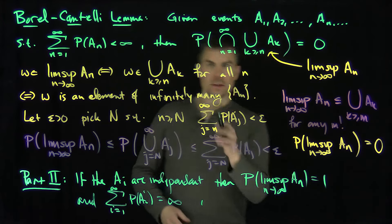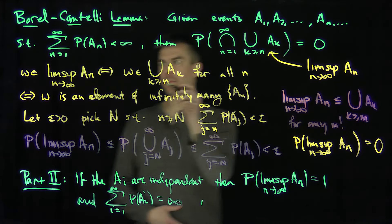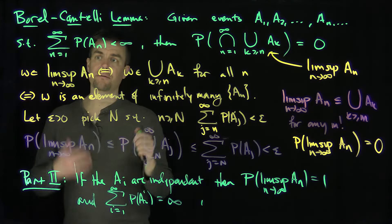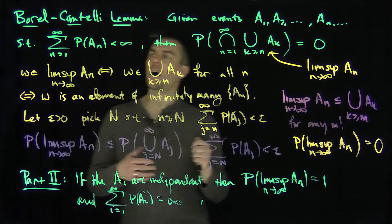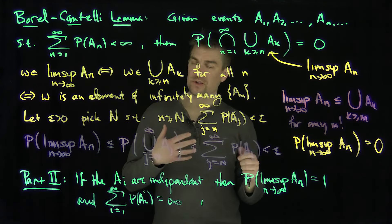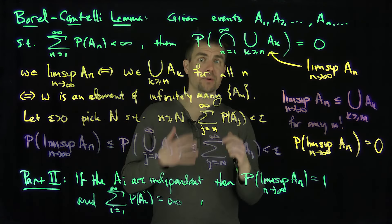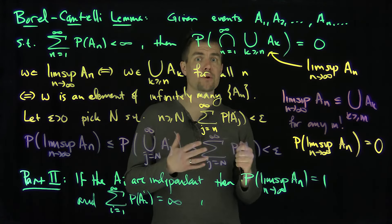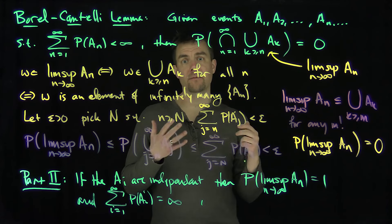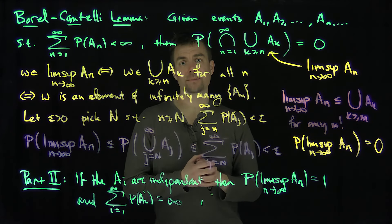The condition we use most often is that when the sum of the probabilities is finite, the probability of the limsup is equal to zero. This occurs a lot in applications — in particular, it occurs a lot when you're showing that an infinite series of random variables converges. Thank you very much.